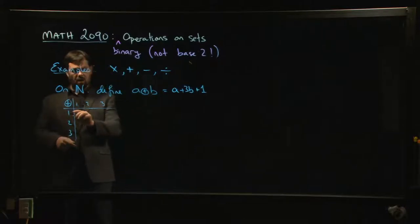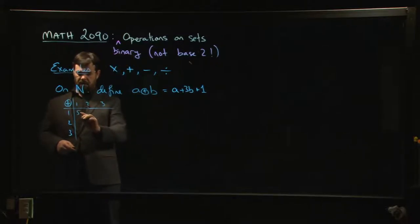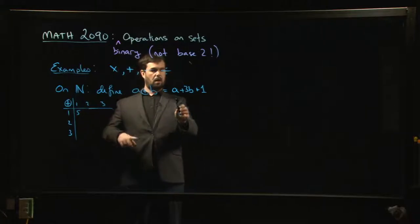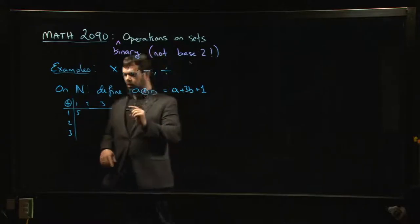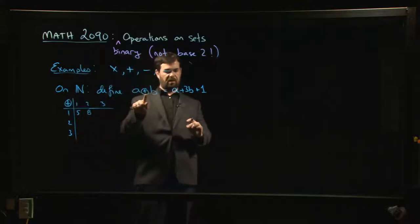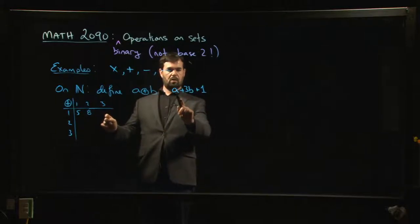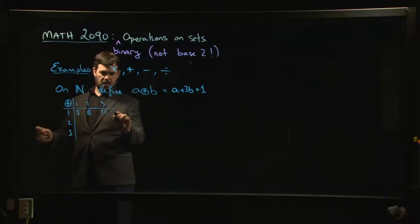1 ⊕ 2, so if we do this for the first input, this for the second input: 1 + 3 times 2, so 1 + 6 is 7, plus 1 more I get 8. 1 ⊕ 3—let's call it ⊕—so 3 times 3 is 9, so 1 + 9 is 10, plus 1 more is 11, and so on.